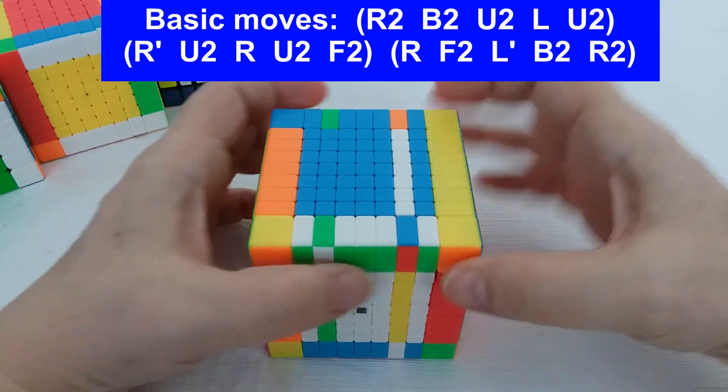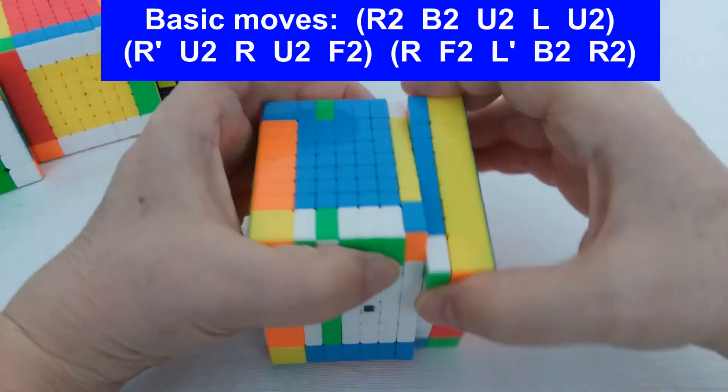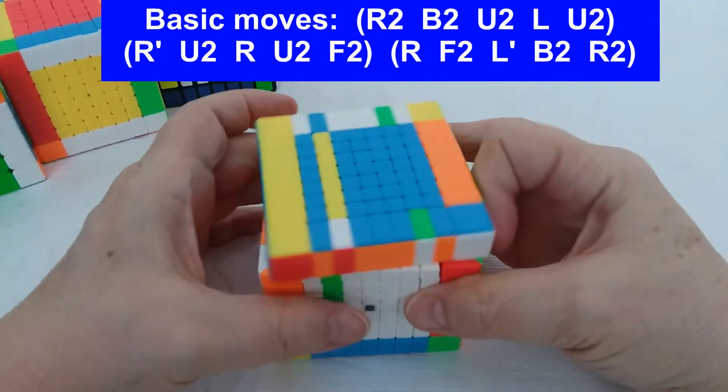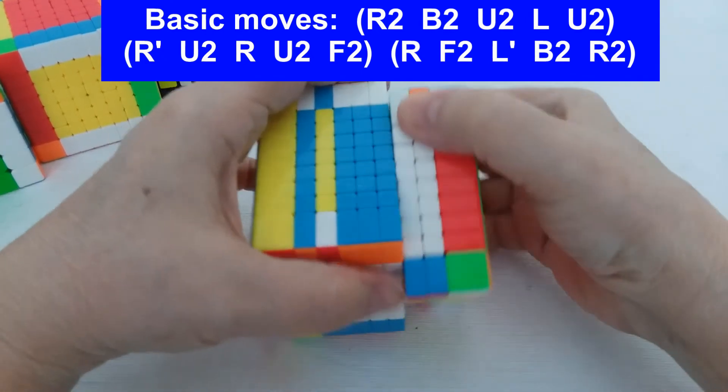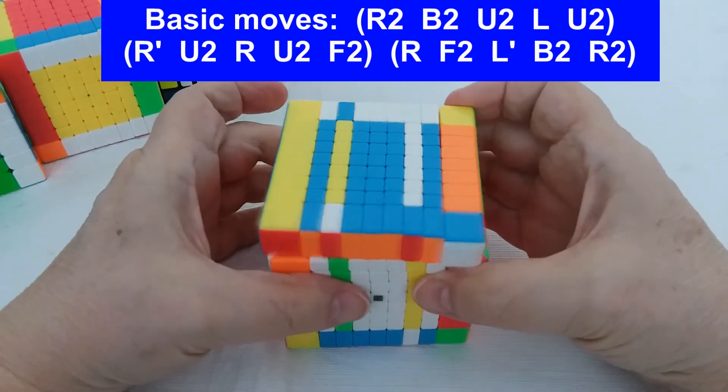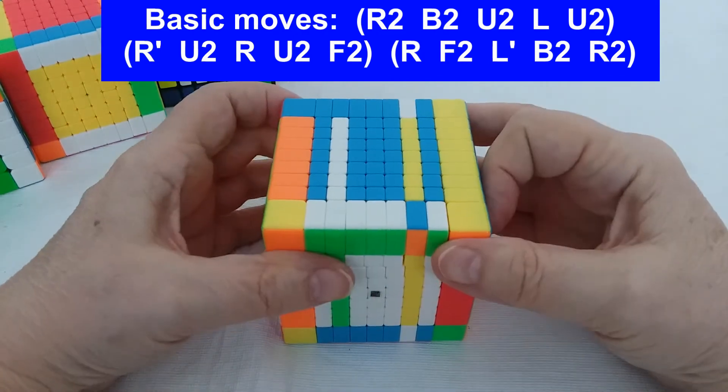Then the next five: R toward me so it's just that inside one, U2, R away - it's just that one we're moving right there, remember - U2 and F2.